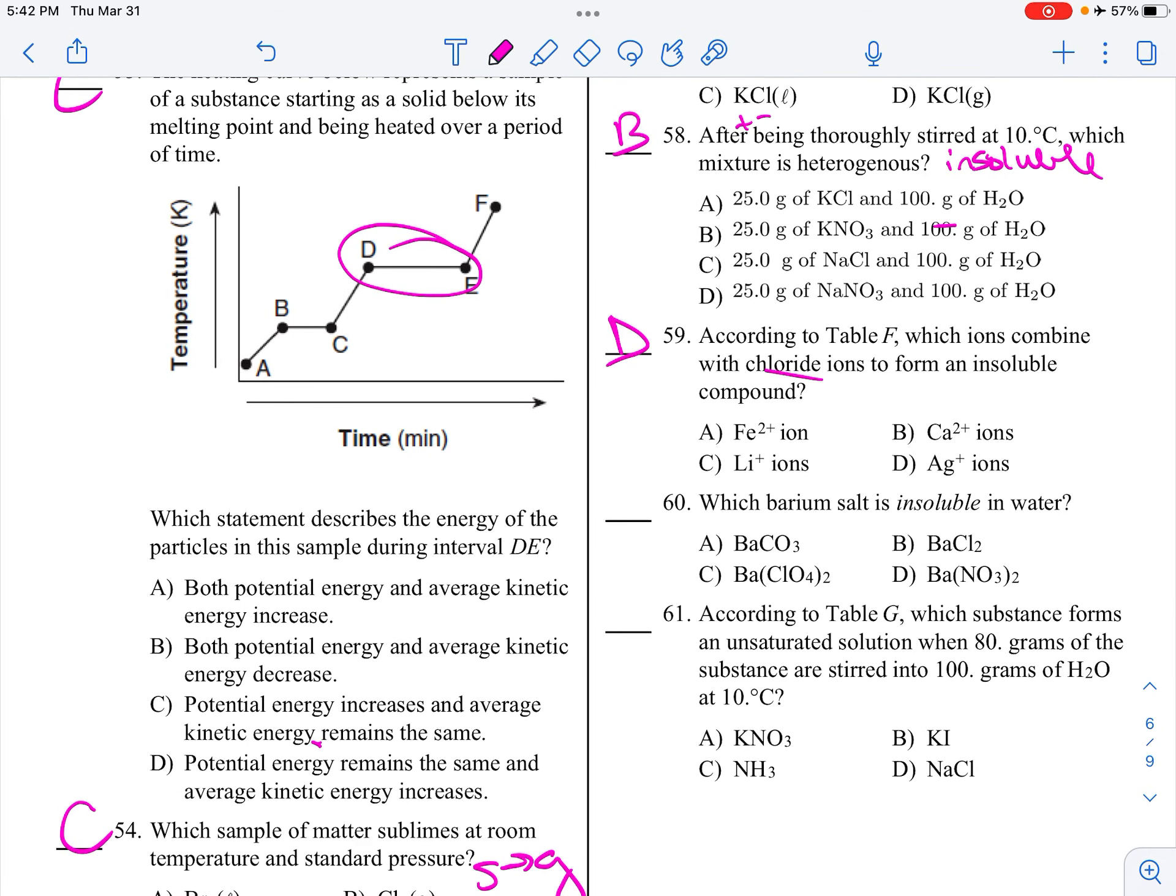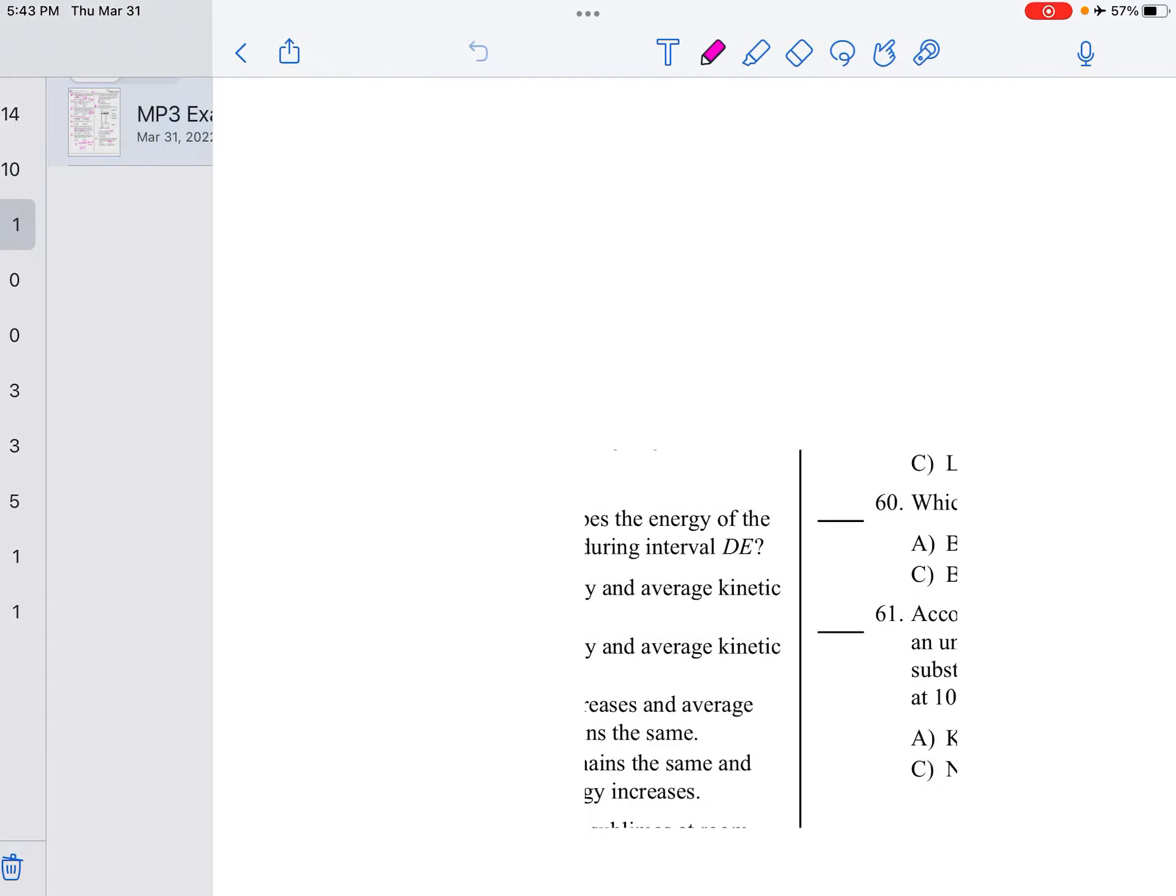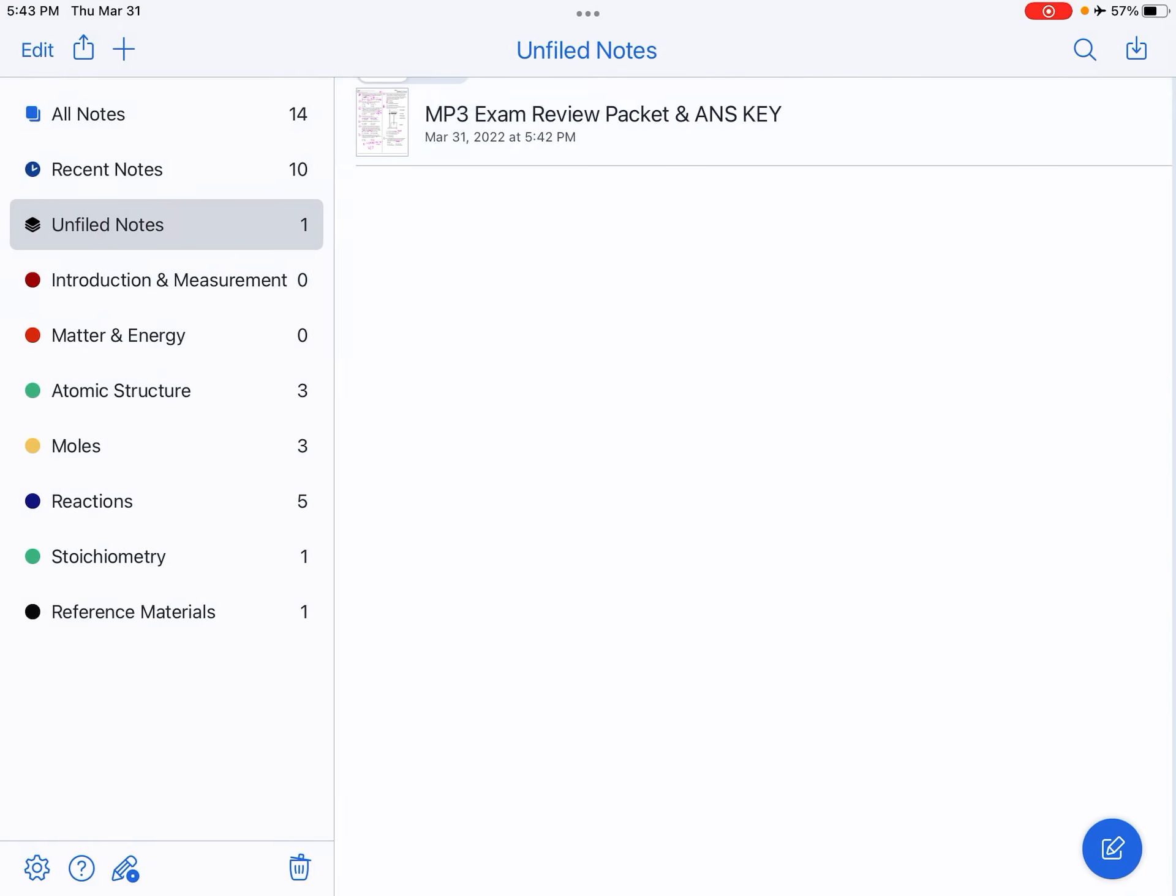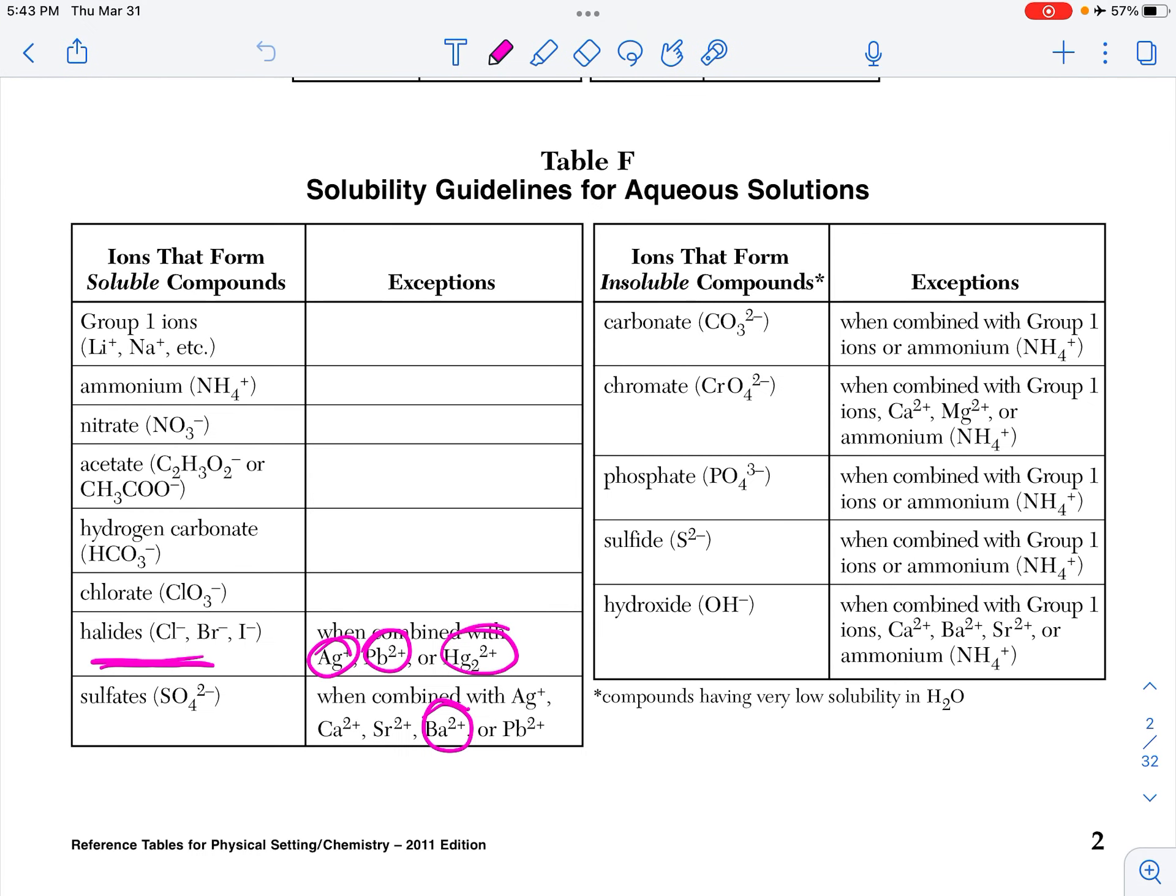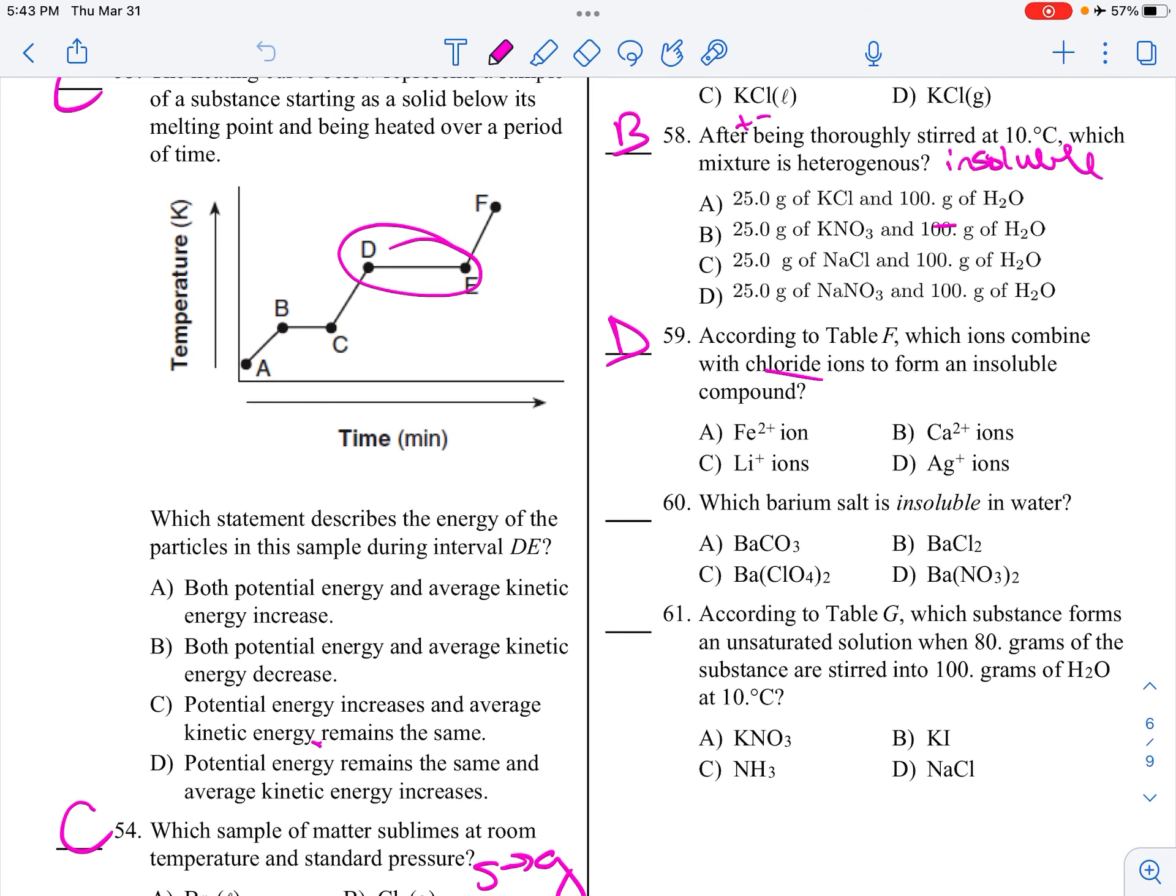Which barium salt is insoluble in water? Carbonate, chlorate, chloride, or nitrate? Looking at Table F for barium, it would be insoluble with barium sulfate. But that's not a choice. Chlorate is always soluble, so it's not chlorate. Carbonate is insoluble except for group 1, so that would be insoluble. Carbonate. So 60 is A.